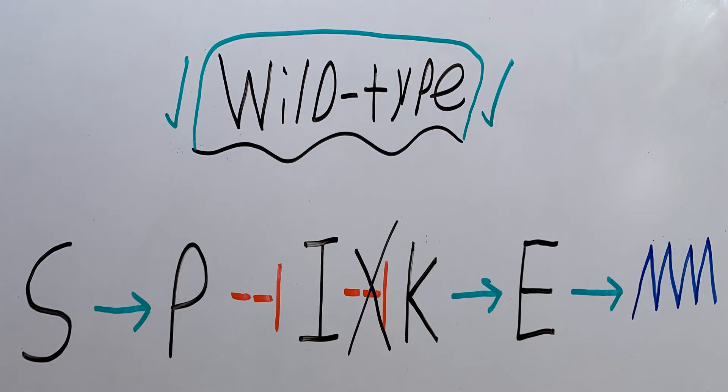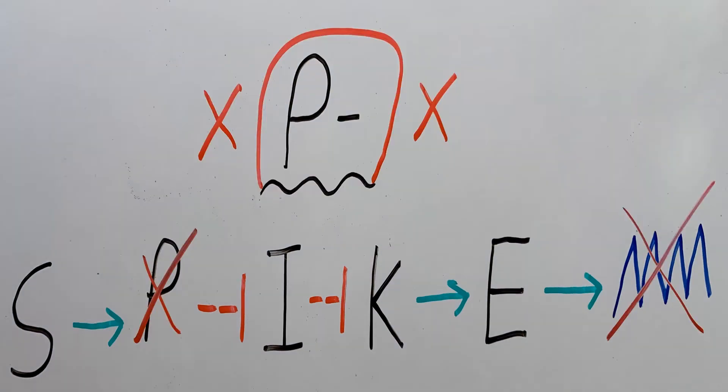Now we examine our second strain in which P is mutated and not functioning. If P is mutated, then P can't possibly inhibit I. So nothing can inhibit I, therefore I is free to inhibit K. And since K is inhibited, then K can't promote E, which means that spikes will not be promoted. So the P mutation does not form spikes.